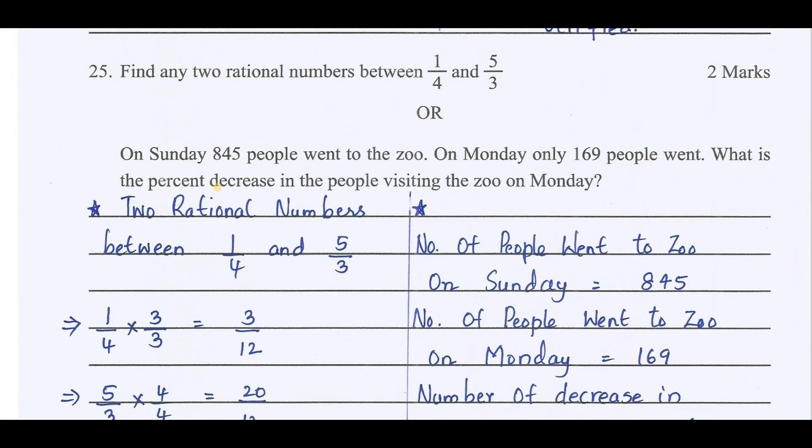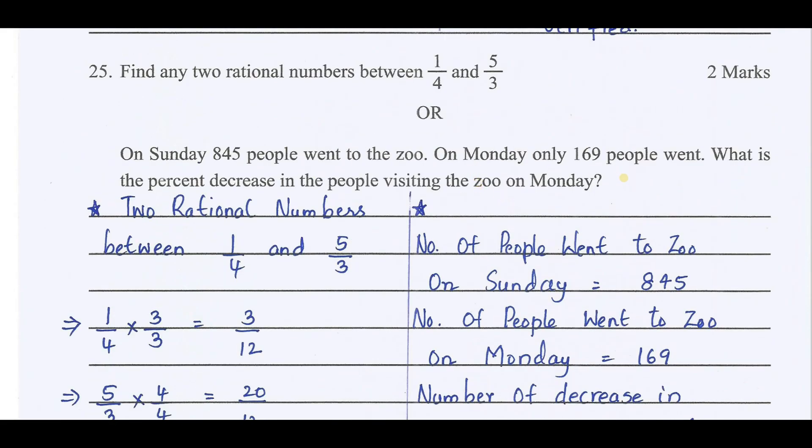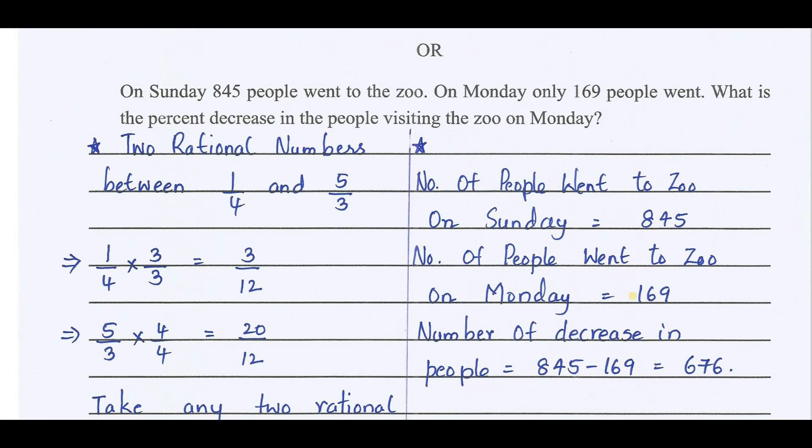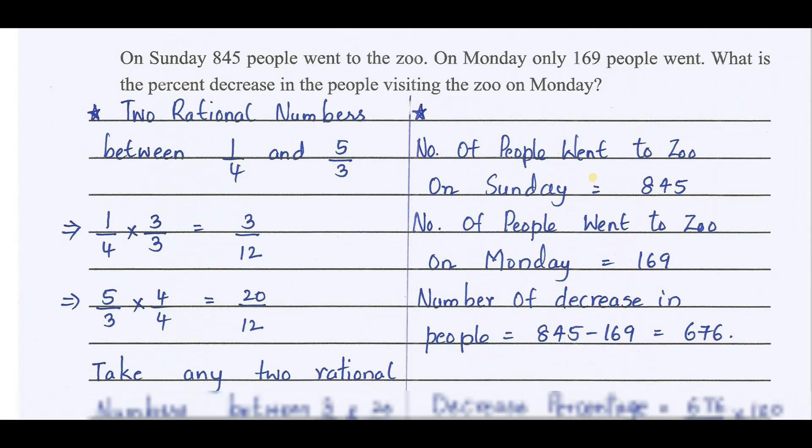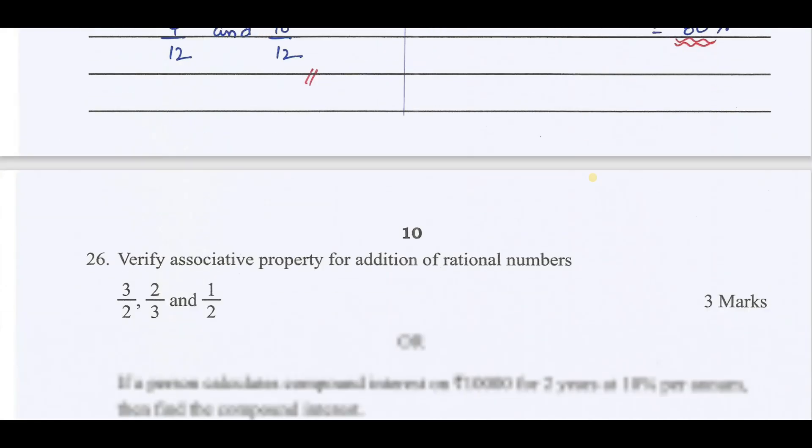On Sunday, 845 people went to the zoo. On Monday, only 169 went. What is the decrease in number? How many people have not went to the zoo on Monday? That is 845 minus 169, we get 676. Decrease in percentage is 676 by 845 into 100. We get 80 percentage.